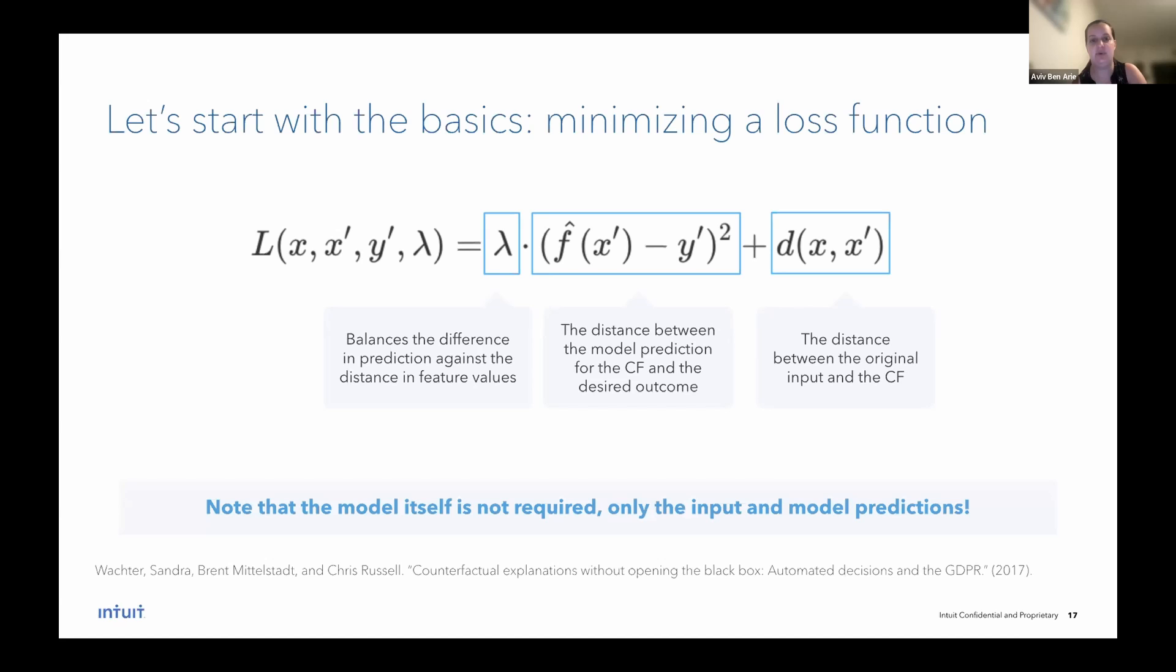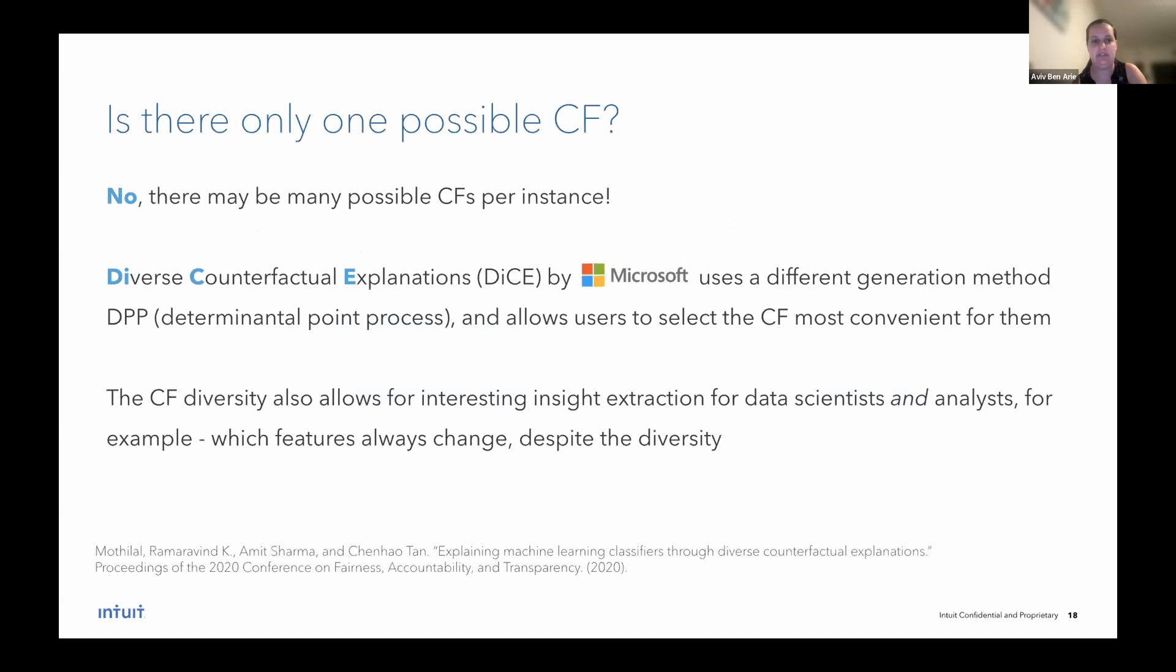However, this generates only one counterfactual. What if there are many possible counterfactuals for a specific instance? And this is called DICE Diverse Counterfactual Explanations, was published by Microsoft two years ago. And it uses a different generation method, not the loss function optimization one. It's called DPP, Determinental Point Process. And this method allows the user to select the counterfactual most convenient for them from a large array of counterfactuals generated.